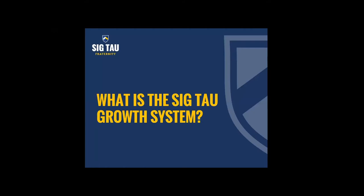You may be wondering: what is the SIGTAU growth system? The SIGTAU growth system is a systemized plan of attack — a universally adopted and accepted system that we as SIGTAU implement when it comes to our membership and recruitment efforts. This is the growth system we put in place during expansions, and the baseline of what we teach chapters at Web Academy. No matter what size chapter you are — single digits, 80 men, or like our Arizona State chapter at over 110 — this is a system you can adopt, break down into simple steps, and apply to your campus and chapter.